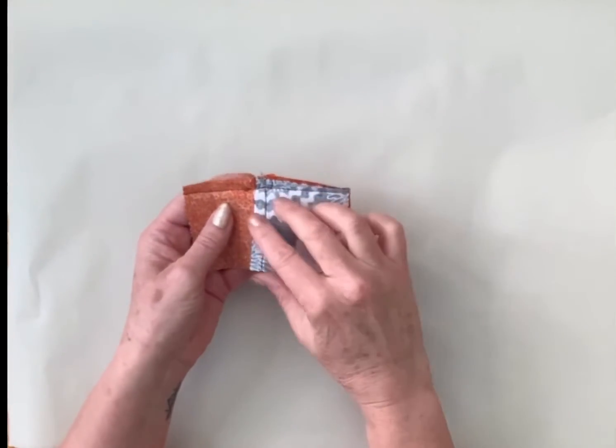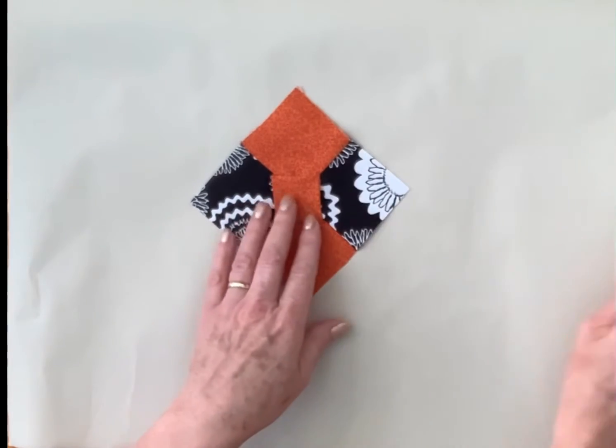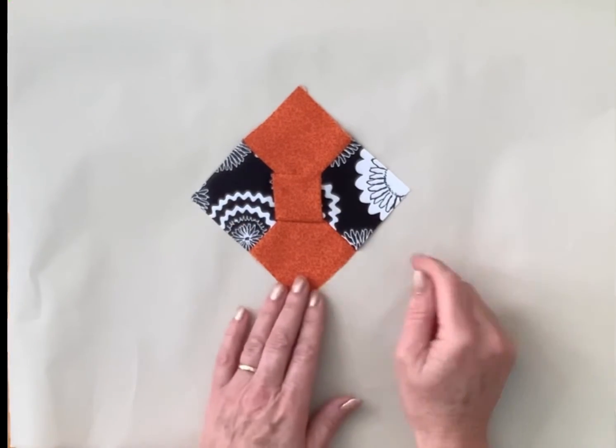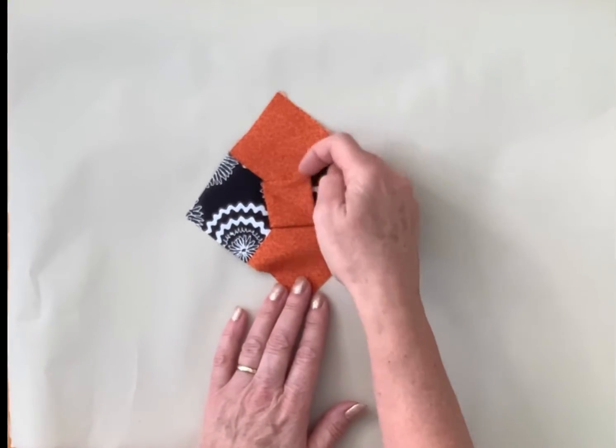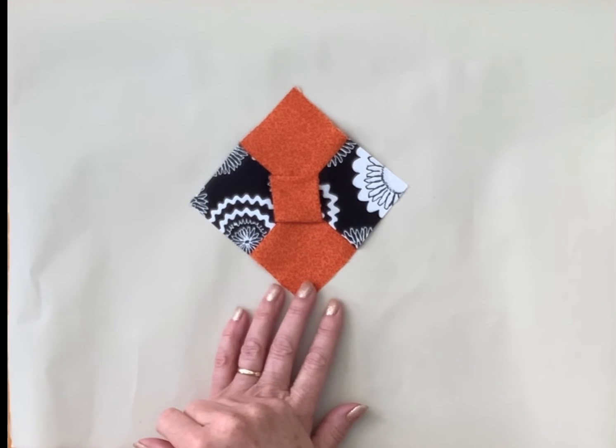And then once you've done your seam along here you can open it out and you can see there's your first bow tie block and you can see here it's got its 3D section. If you want to give us a like or a thumbs up and share it I'd love to see what your block looks like and what colors you turn.